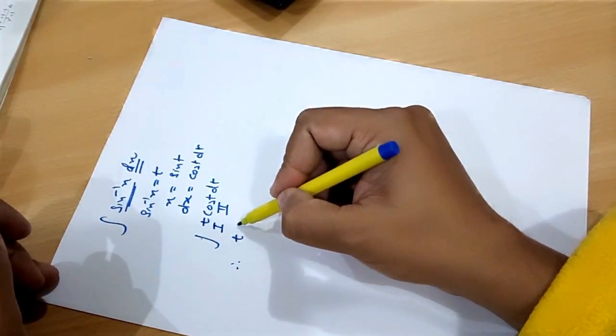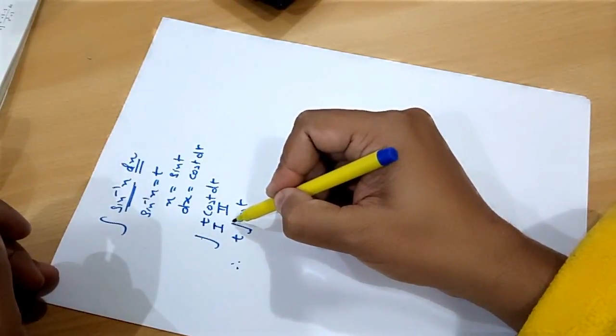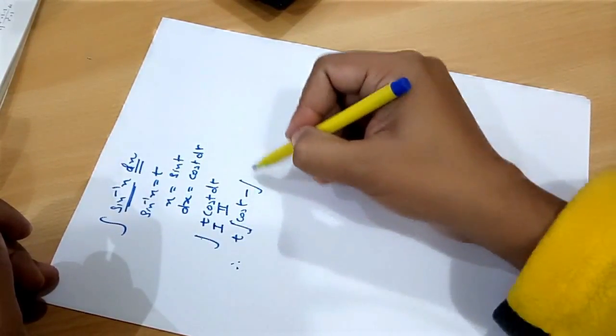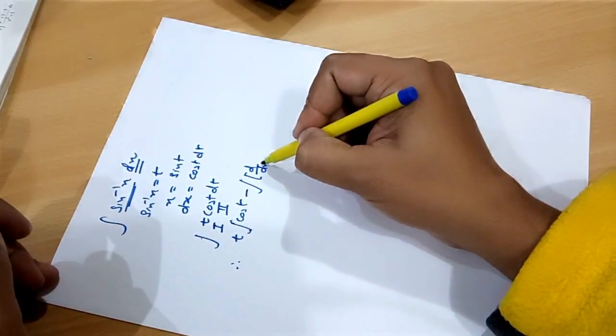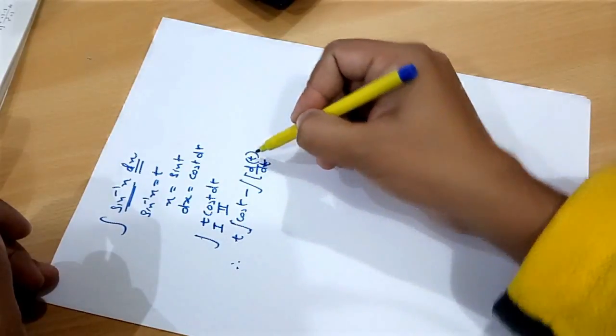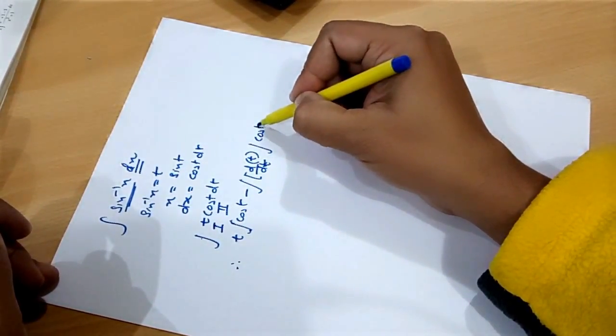Therefore, t integration of cos t minus d by dt of t integration of cos t.